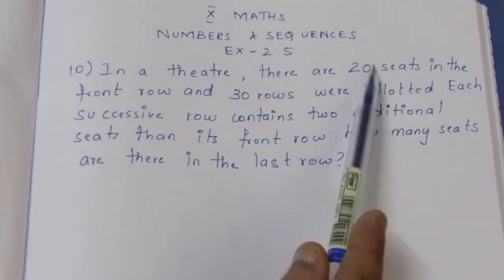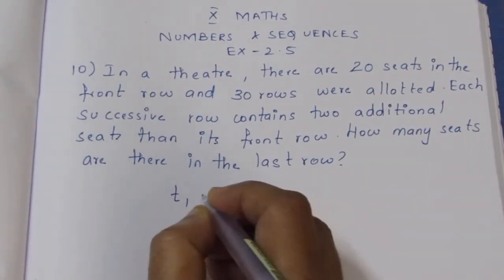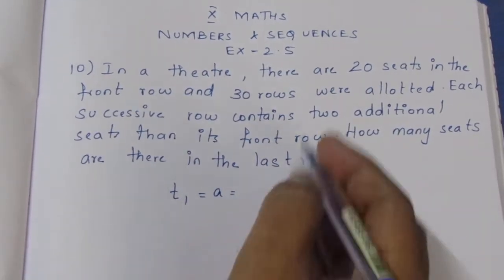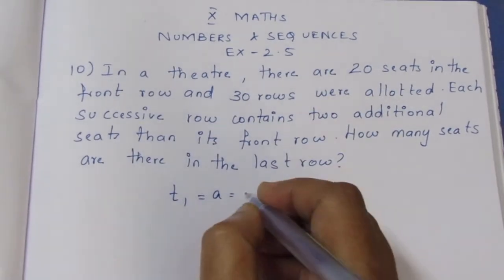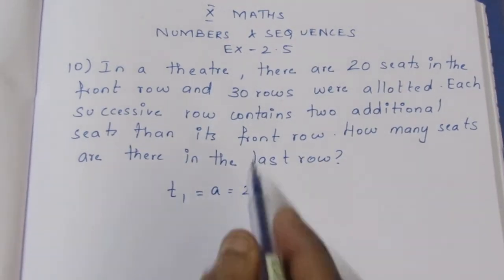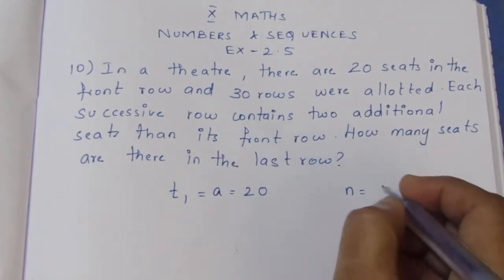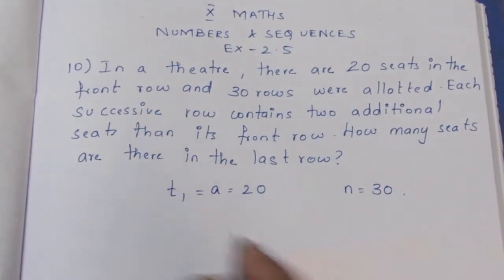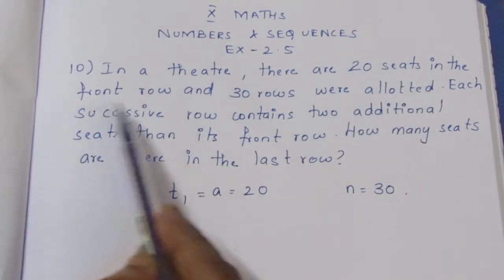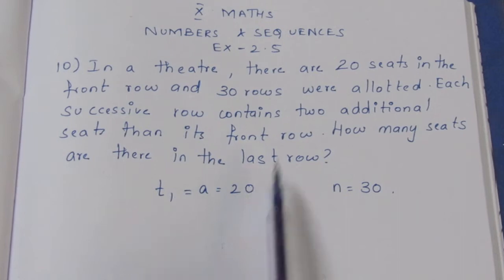The first row has 20 seats. T1 is nothing but A. The number of rows is N. So the first row starts with 30 rows total. T1 is equal to A, which is equal to 20.